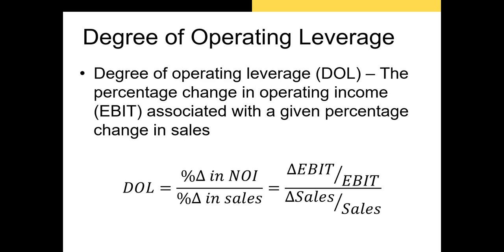For example, a DOL of 2.5 would indicate that if there was a 1% change in sales, we would expect a 2.5% change in EBIT. Some of these numbers are not easily calculable unless we have historical financial statements to compare through time, or we can forecast EBIT and sales. There are other formulas we can use to calculate DOL — let's take a look at an example using this formula first.